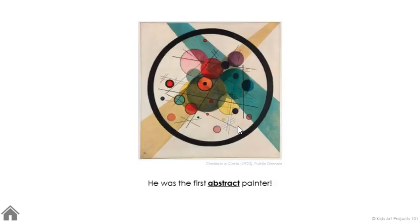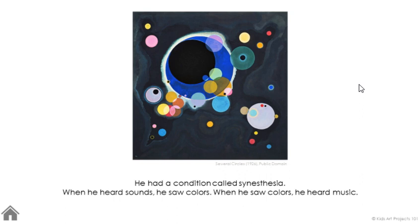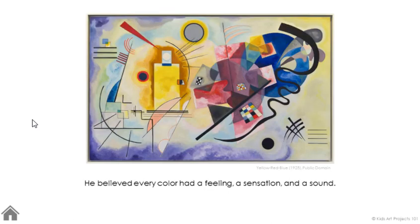This guy is known for being the first abstract painter, which is pretty impressive to kids. He uses real familiar basic circles, squares, lines, triangles, and rectangles. He is one of those artists where his artwork is the kind of abstract artwork that feels very accessible to young kids. They understand the language of basic shapes.